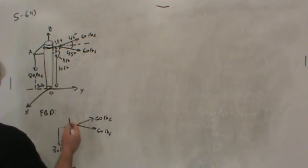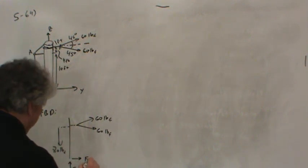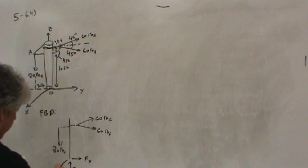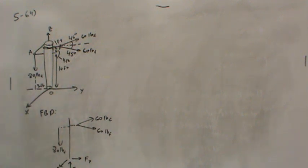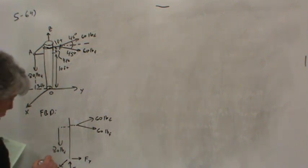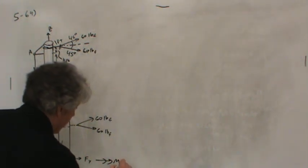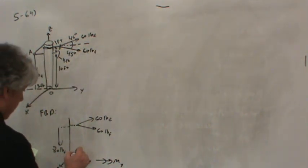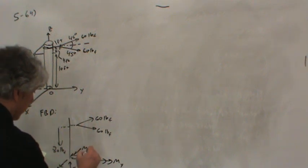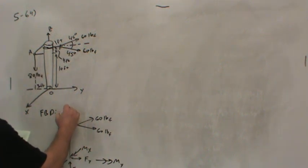And then at the base of the pole, there must be reactions. For example, Fz, force holding the pole up, Fy, and Fx. So each one of these are oriented along the positive coordinate directions. And then there must also be, or at least potentially, moments, like the moment about the Y axis, a moment about the X axis, and a moment about the Z axis.